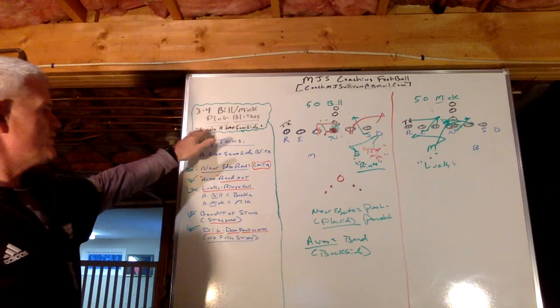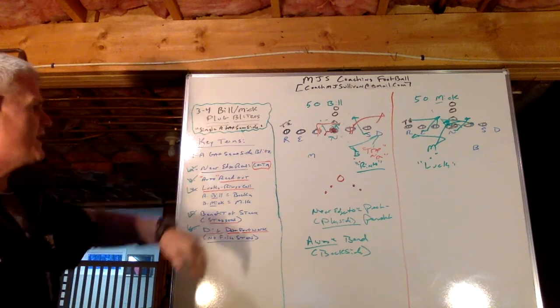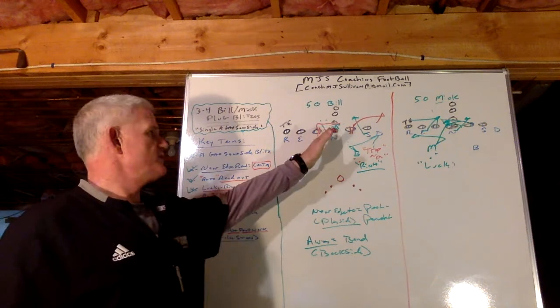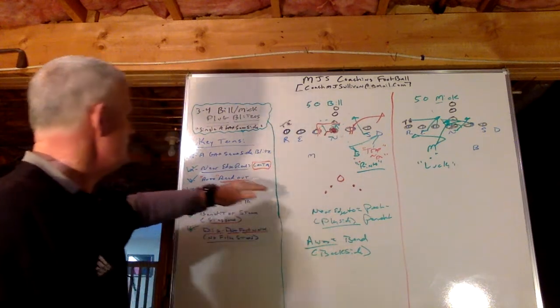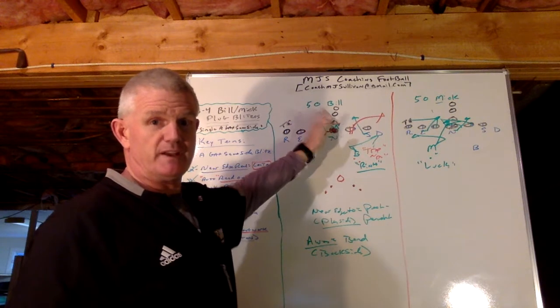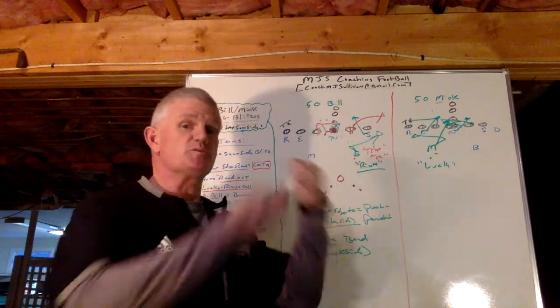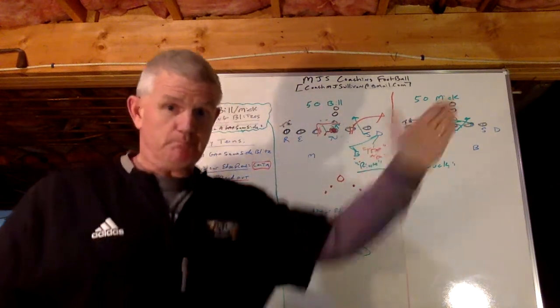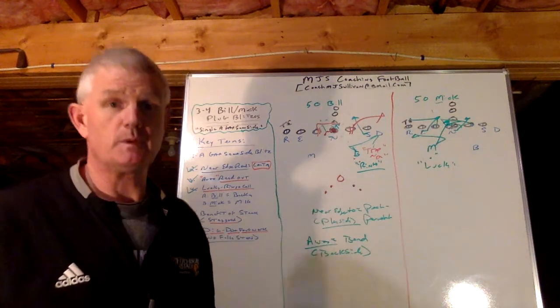So again, single A gap, same side blitz, it's going to be the center near edge. It's an auto readout, which means we'll blitz in that gap unless one of the two guards is pulling to me. And that is getting me out of it.